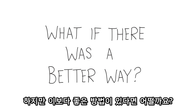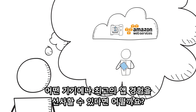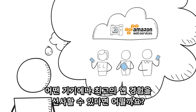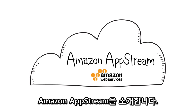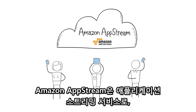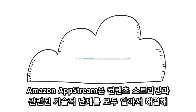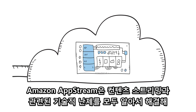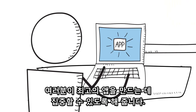What if there was a better way? What if you could leave all the graphical and video heavy lifting to the cloud and deliver a great quality application experience to your users on almost any device? Introducing Amazon AppStream. Amazon AppStream is an application streaming service that lets you stream graphically intensive applications from the AWS cloud. Amazon AppStream handles all of the technical hard work associated with streaming the content, leaving you to focus on developing the best application.